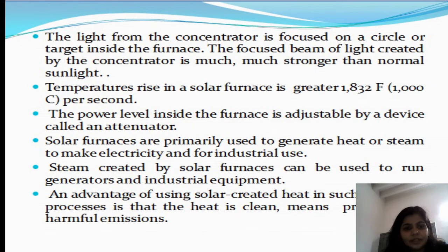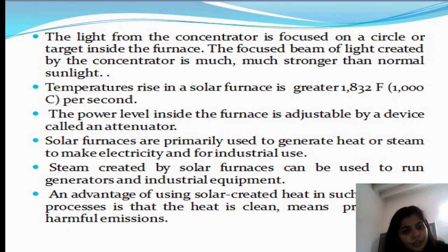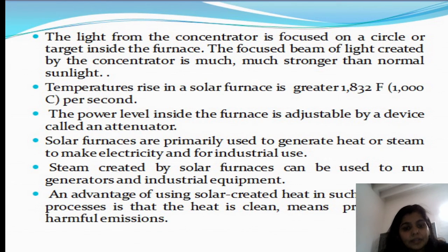The light from the concentrator is focused on a circle or target inside the furnace. The focused stream of light created by the concentrator is much, much stronger than normal sunlight. Temperatures rise in a solar furnace to greater than 1832 degrees Fahrenheit per second. The power level inside the furnace is also adjustable by a device called an attenuator. These solar furnaces are primarily used for generating heat or steam to make electricity for industrial use. Steam created by solar furnaces can further be used to run generators and other industrial equipment. An advantage of using solar-created heat in such systems is that the heat is clean and without any harmful emissions.